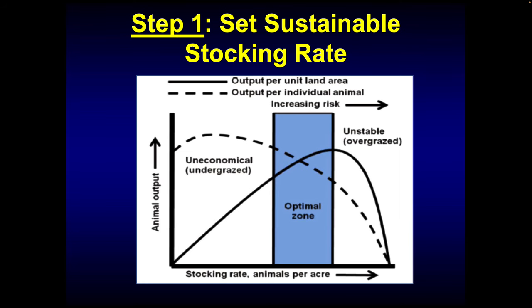The first one I want to mention may be a little different than you're used to hearing about, but it has to do with stocking rate. A lot of times when we get into the situation where our pastures are really in bad shape, we have to ask ourselves what happened. Sometimes it's drought, sometimes it's flood, but a lot of times we may be stocked a little bit higher than we should be. That's what this diagram shows — we've got output per unit of land area and output per individual animal, and then we've got stocking rate.